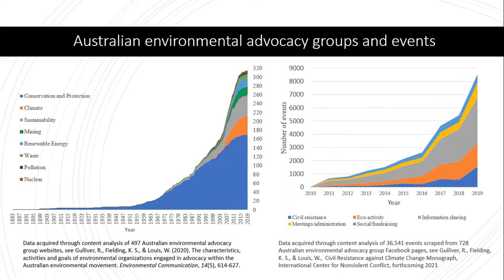Even though the growth of those groups corresponds to the growth of Facebook as a platform, we can still see that when we've grouped events into five different types, the most common type of event used by environmental advocacy groups is information sharing — things like having a public meeting, a candidates forum, or film sharing. That's really interesting information, and it is going into the civil resistance monograph coming out later in the year.